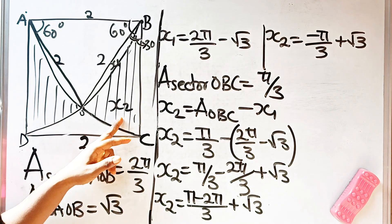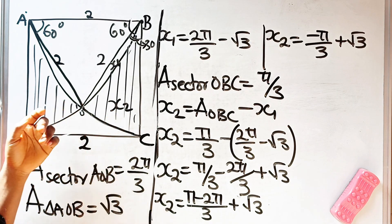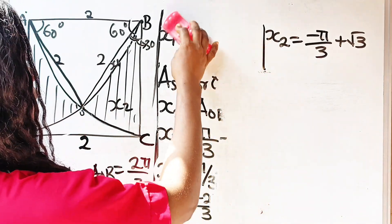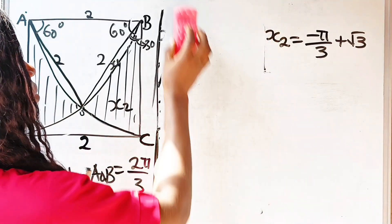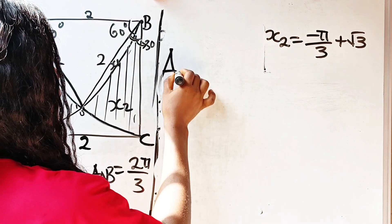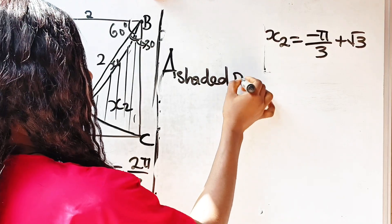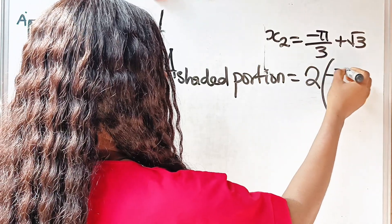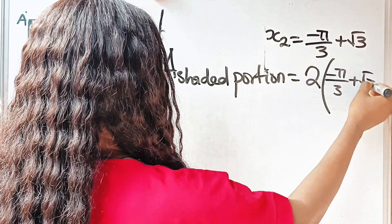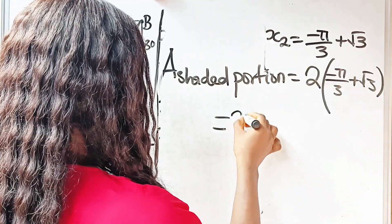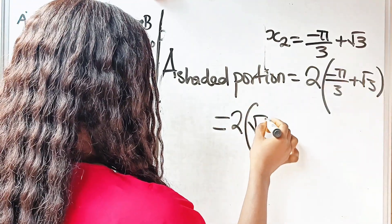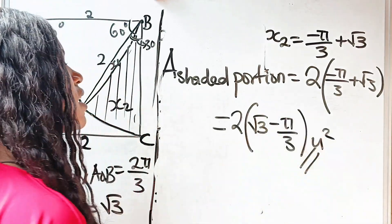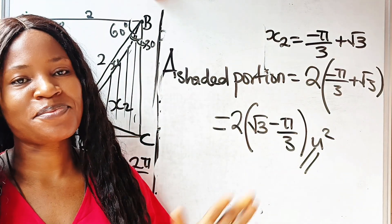Remember that we have this here, here, and here, and they are symmetrical — so they are equal. Therefore the area of the shaded portion equals two multiplied by negative pi over three plus root three, which we write as two times the quantity root three minus pi over three, in square units. Thank you so much for watching — see you in my next video.